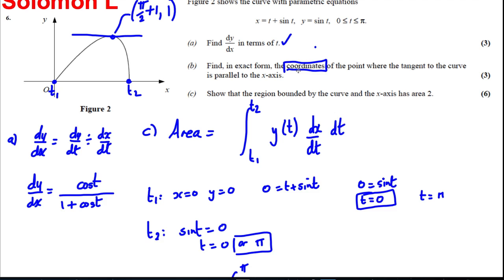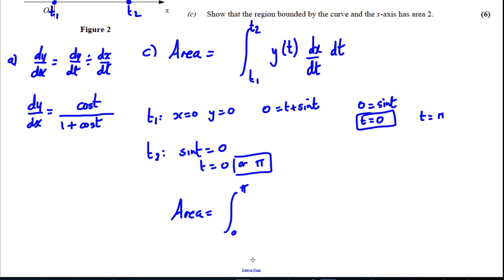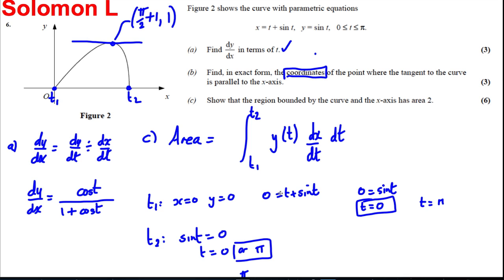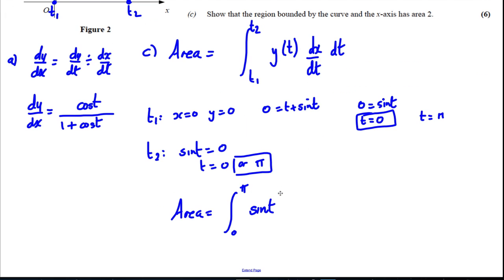So the area is therefore the integral between 0 and pi. y of t, well, y of t is sin t. dx by dt, we worked that out previously, it's 1 plus cos t. And it's going to be with respect to t dt.